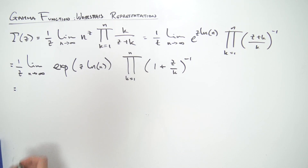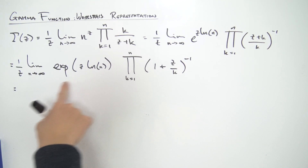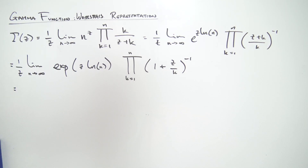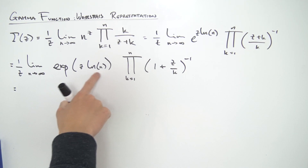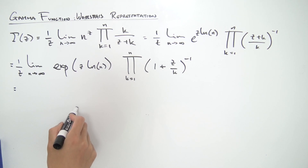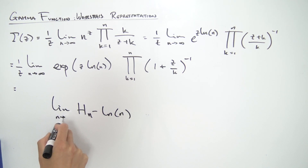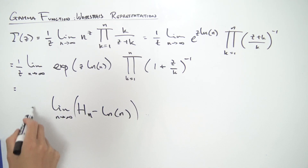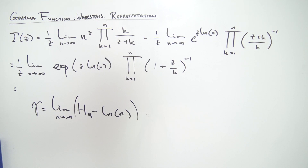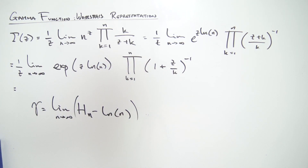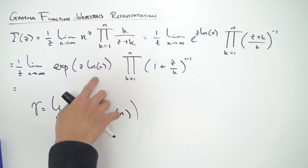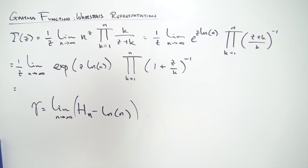Now we're going to start manipulating the exp term. Notice we have a natural log of n and this limit as n approaches infinity. If you've done a bit of analytic number theory, you know the Euler-Mascheroni constant is defined as the difference of the harmonic series and the natural log in the limit as n approaches infinity. We will see the Euler-Mascheroni constant appear in this representation, so we just need to manipulate this part to include this harmonic series.